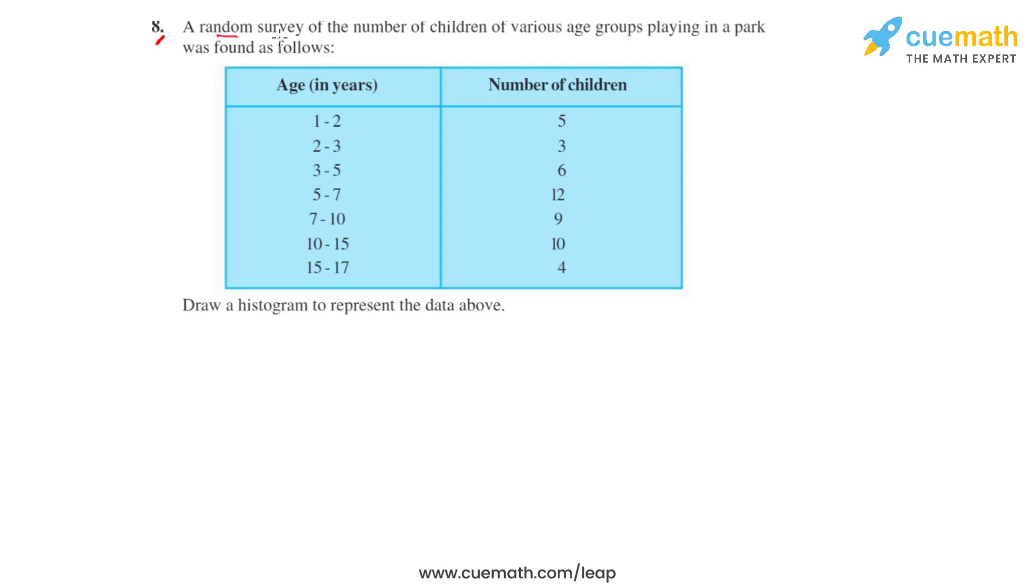Question number 8 says that a random survey of the number of children of various age groups playing in a park was found as follows. So this is the given data that we have. We have to draw a histogram to represent the data above.